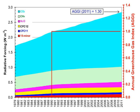Since about 1750, human activity has increased the concentration of carbon dioxide and other greenhouse gases. Measured atmospheric concentrations of carbon dioxide are currently 100 ppm higher than pre-industrial levels. Natural sources of carbon dioxide are more than 20 times greater than sources due to human activity, but over periods longer than a few years, natural sources are closely balanced by natural sinks, mainly photosynthesis by plants and marine plankton.